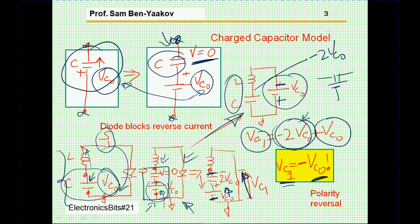So if we start with a charged capacitor with some voltage across it and we short the circuit, then open it as the current goes to zero, or use a diode to stop the current, we'll end up with the same magnitude of voltage across the capacitor but with reversed polarity.